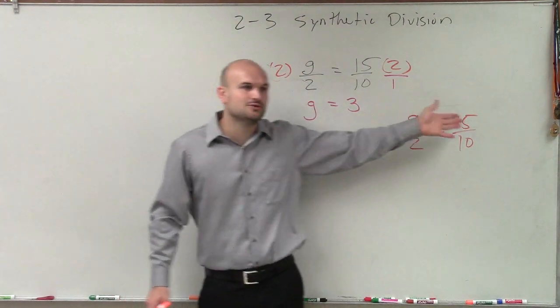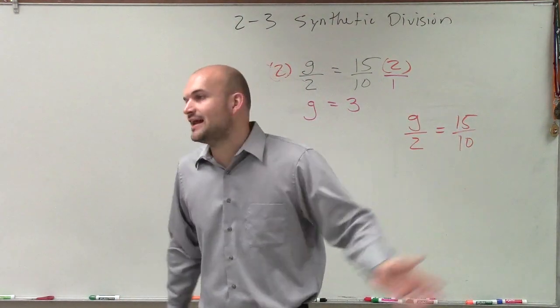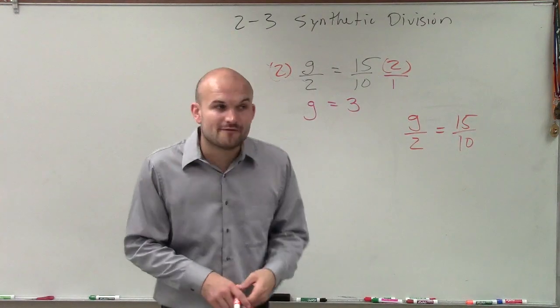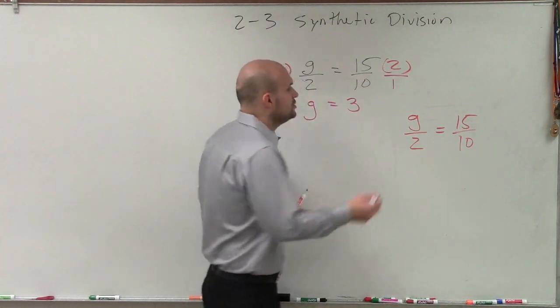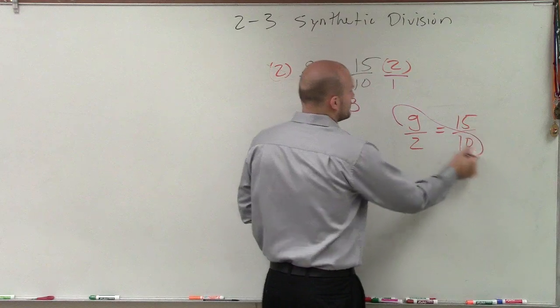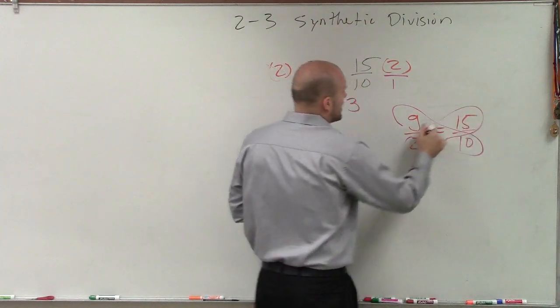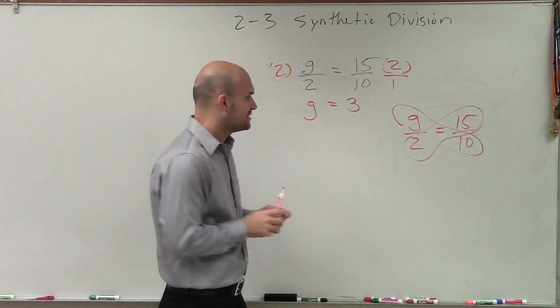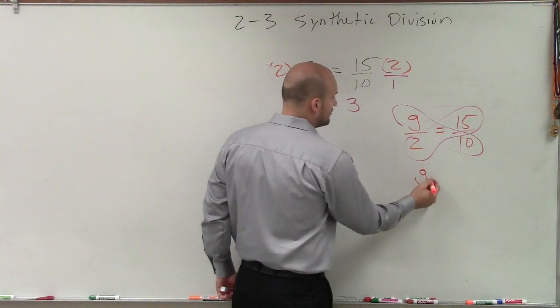when you have a ratio equal to another ratio, we call that a proportion. And when you have a proportion that you need to solve, you can apply cross multiplication. And what I want you guys to understand, cross multiplication is just another way for us to solve.